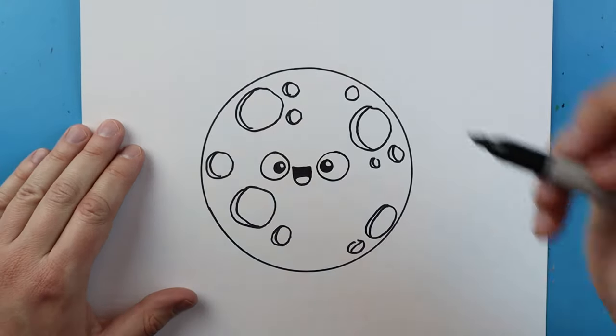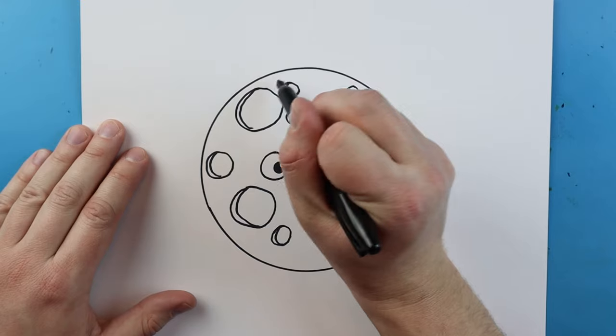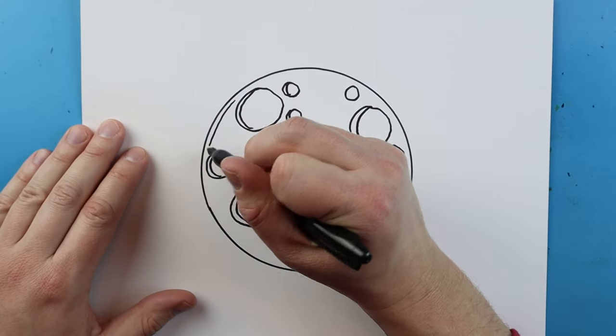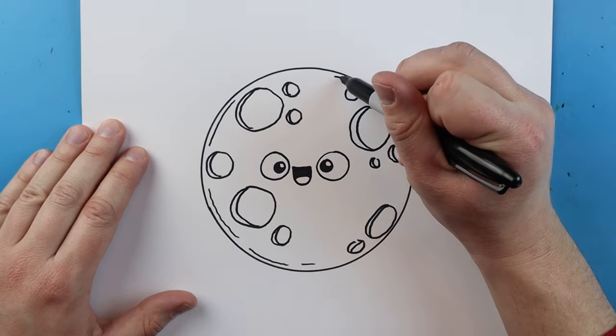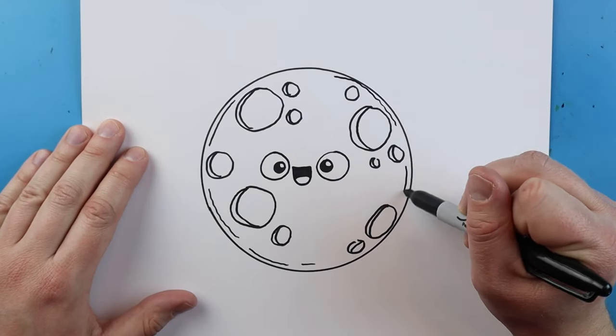Now to add some more detail onto our Mars planet, I'm going to go right around the edge here and just add a little broken line or a few broken lines right along the edge here for a little bit of detail.